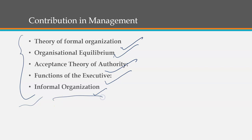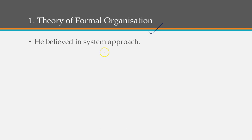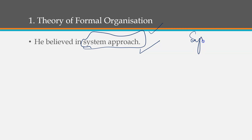Let's understand each of these in detail — what he basically wanted to say, and how he understood management. Starting with the first: theory of formal organization. He believed in the system approach. System approach means that management or the organization is basically like a system.